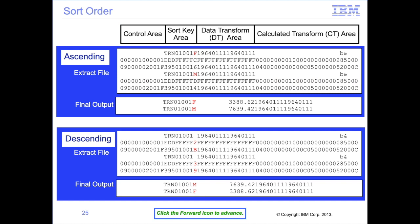No matter what sort order is specified in the view for sort fields, SAFR always instructs the sort utility to sort the file in ascending order. This is necessary because of the mixture of ascending and descending fields within the same view or across different views. To create descending sort orders, SAFR converts descending sort data in the extract file to its two's complement, which simplifies sorting. When sorted and then converted out of two's complement, the data will appear in descending order. In this example, we change the sort order on the gender code from ascending to descending. The two's complement of M and F are unprintable characters with hex values of 2B and 39 respectively. Because 2B is less than 39, the M records move to the top of the file, and when converted back to M or F, the file output shows M before F — a descending sort.